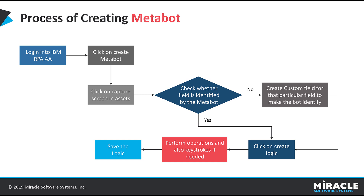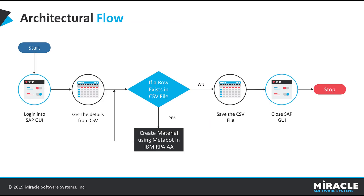Now we will see the architectural flow. Initially, we log in to SAP GUI and get the details from the CSV file. If a row exists in the CSV file, it creates a new material in SAP using the created MetaBot. If not, it saves the CSV file and exits SAP GUI. This process repeats until all records in the CSV file are processed.